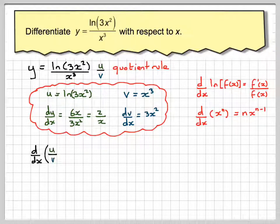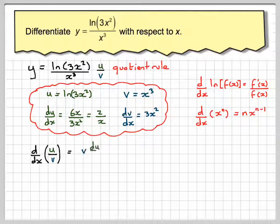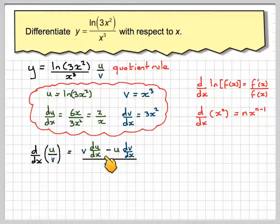The quotient rule: d/dx of u/v is v(du/dx) minus u(dv/dx) over v squared.